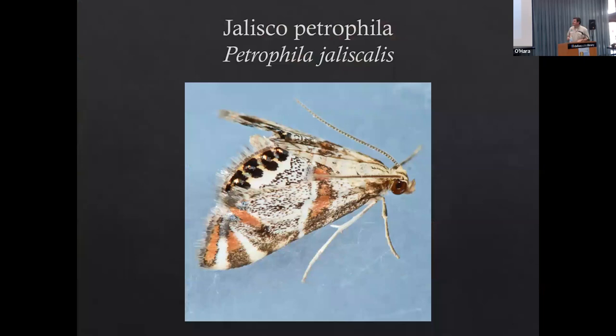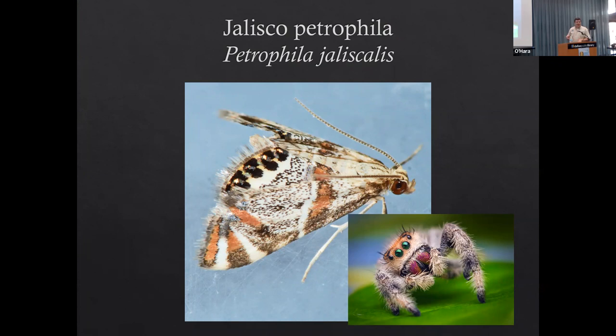Do you see what I see? It's a moth - you may have to position your head a little bit to see it. This might be mimicking a little spider. If there's something like a praying mantis or an ant coming to nibble on this moth, and if it wiggles its wings just right, perhaps it mimics a spider - something that could potentially be a predator itself.